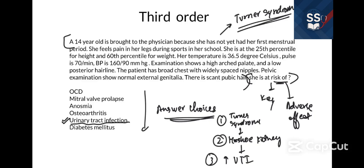The most common question types on the USMLE are second and third order — you won't get many first-order questions. Because of that, you need very deep concepts. As you saw, you have to know even the complication of a complication, which makes for a tough exam and requires very, very strong concepts.